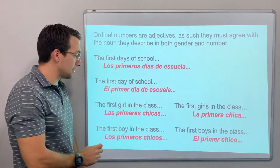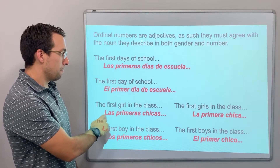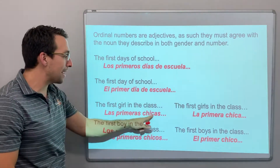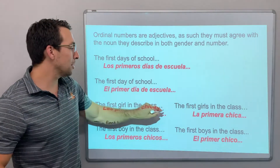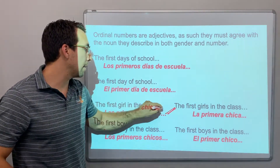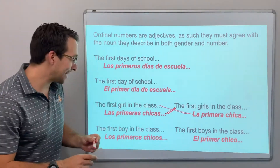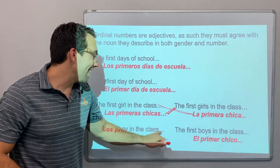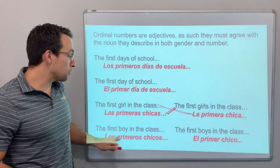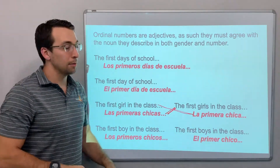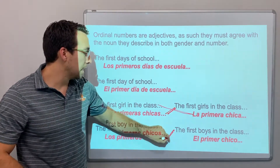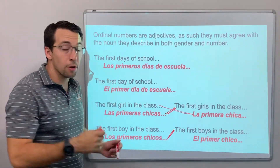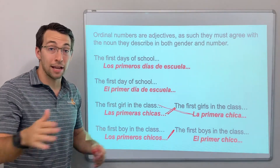The first girl in the class — la primera chica. The first girls — las primeras chicas. The first boy in the class — el primer chico versus los primeros chicos, the first boys. The forms are significant. These ordinal numbers are adjectives, and as such they have different forms.